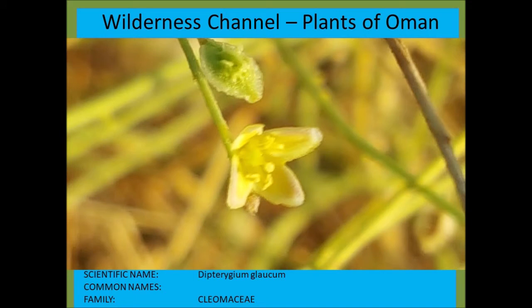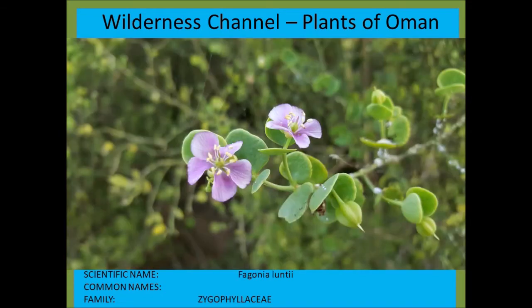Dipterygium glaucum is often confused with other yellow-flowered bushes just because of the structure of the bush itself — for example Ochradenus species, Crotalaria aegyptiaca, and similar plants.